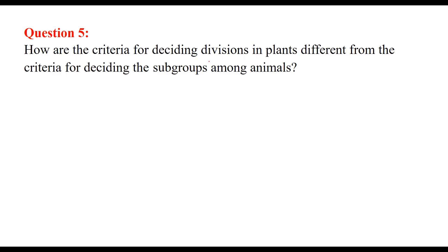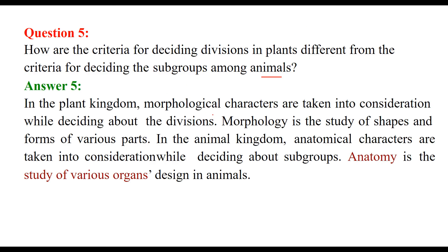How are the criteria for deciding divisions in plants different from the criteria for deciding subgroups among animals? In the plant kingdom, morphological characters are taken into consideration for classification. Morphology is the study of shapes and forms of various parts. In the animal kingdom, anatomical characters are taken into consideration for deciding subgroups and divisions. Anatomy is the study of the design of various organs in animals.